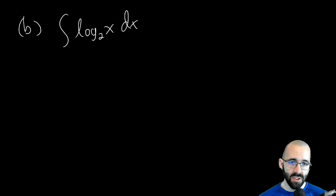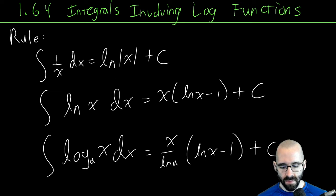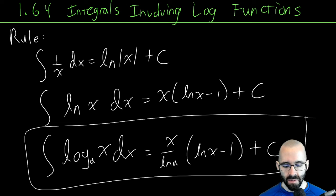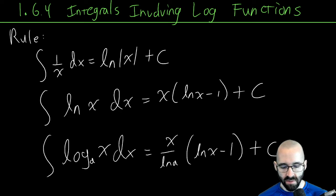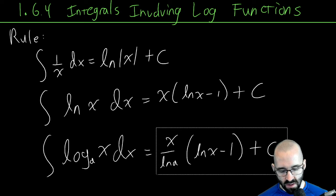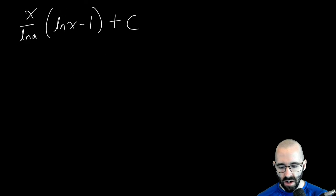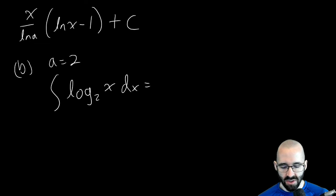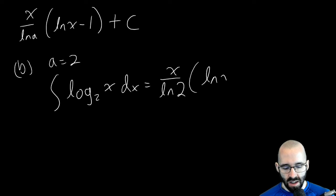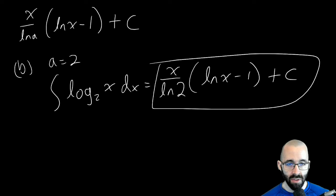Part b: find the anti-derivative of log base 2 of x dx. This is just practice using the third rule. When a = 2, we simply substitute into the formula: the anti-derivative of log₂(x) dx equals x divided by ln(2), times (ln(x) − 1), plus C. That's all there is to it.